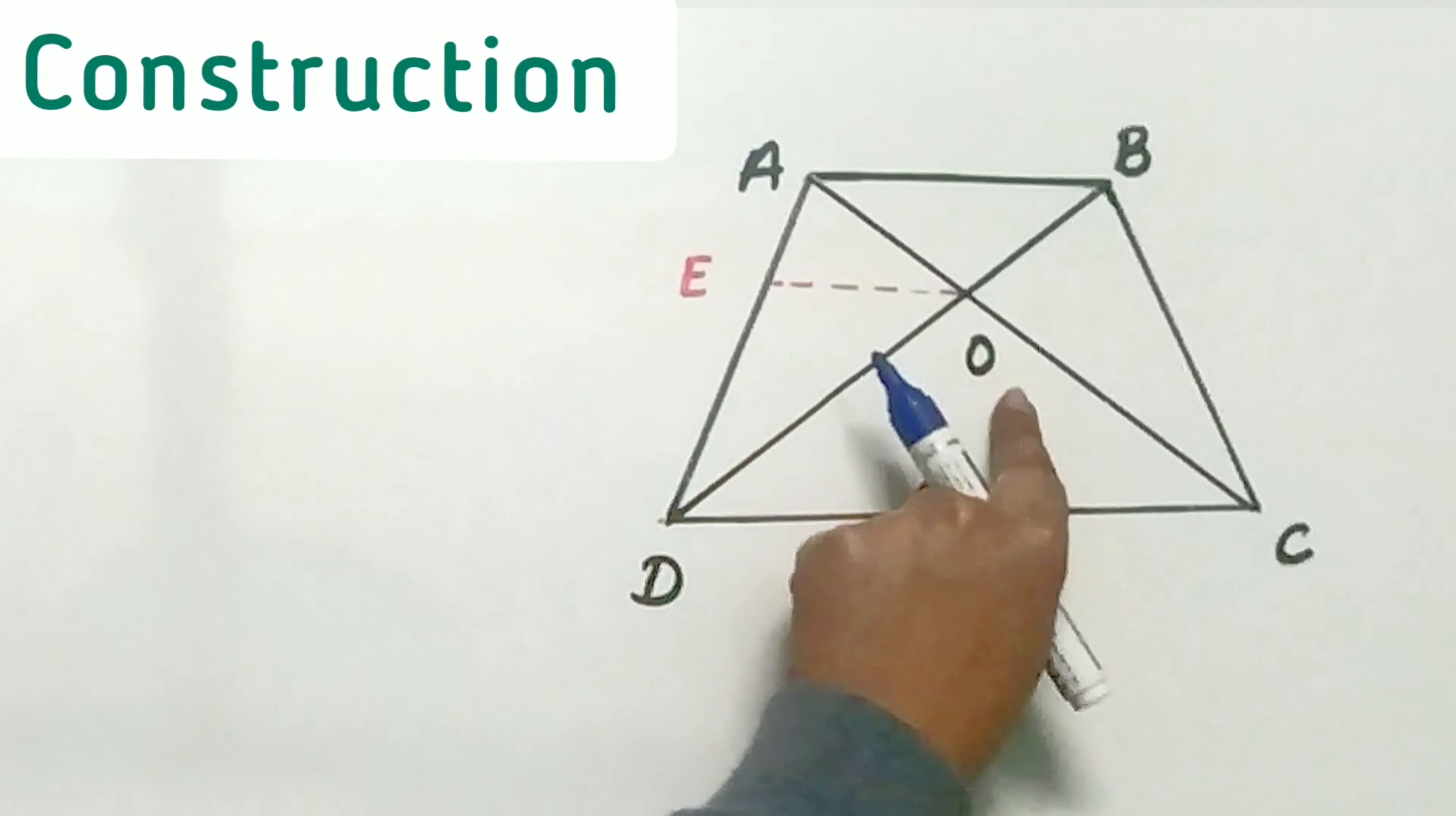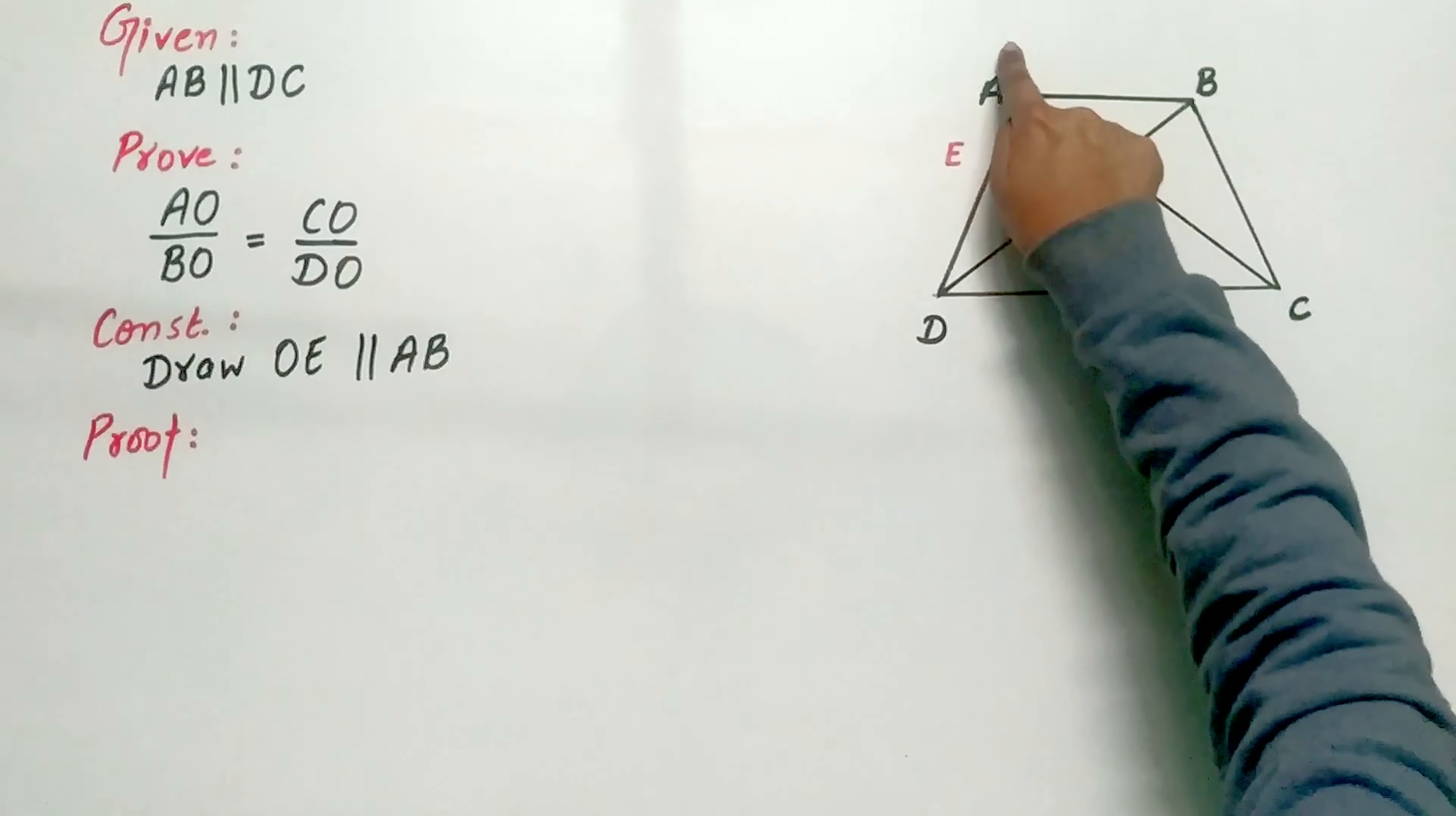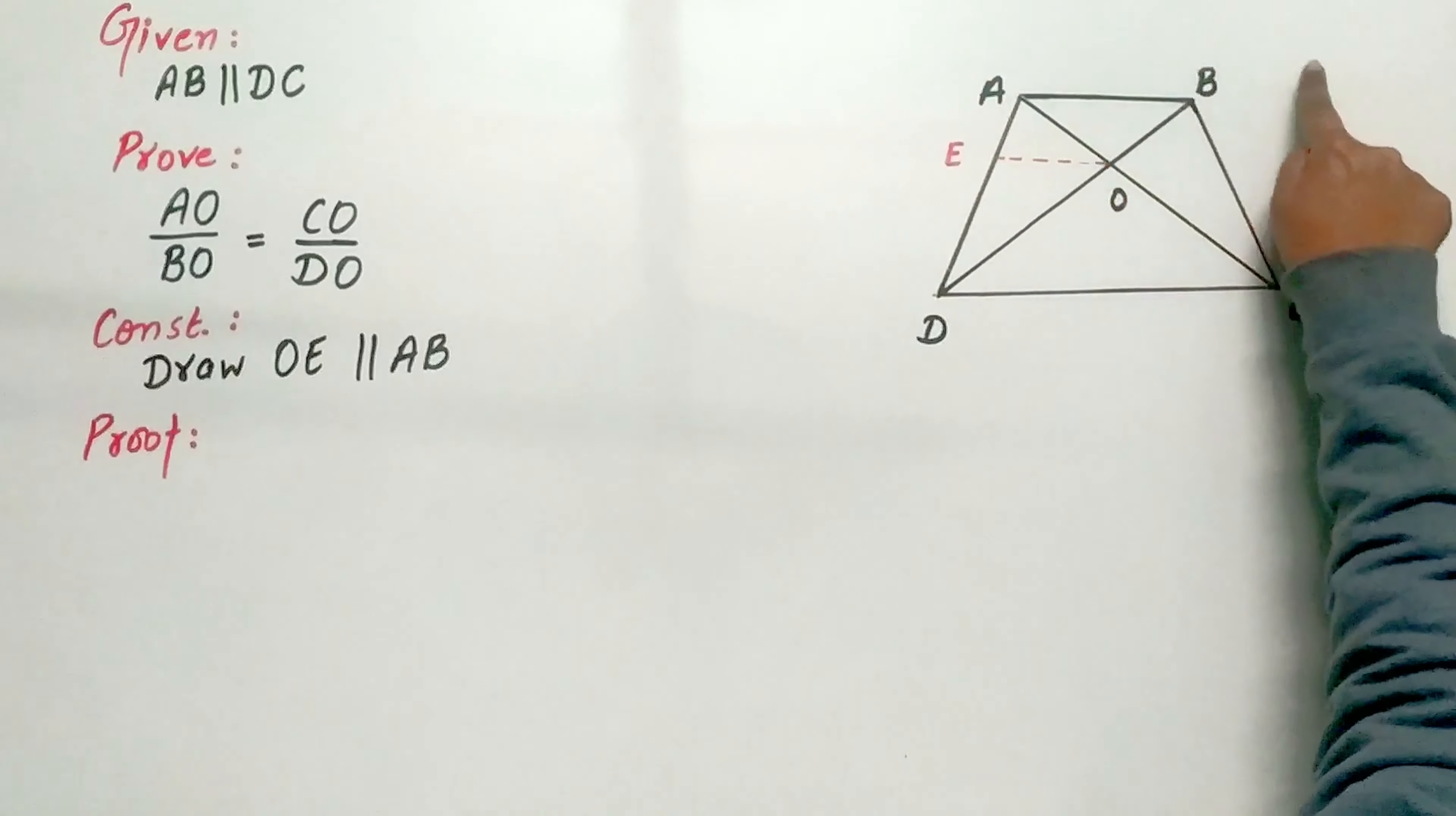To prove it, draw a line OE such that it is parallel to AB. In triangle ADB, EO is parallel to AB.